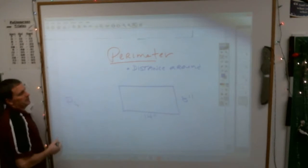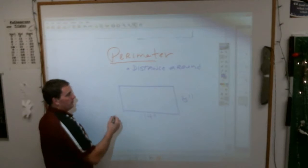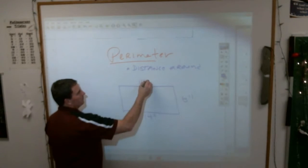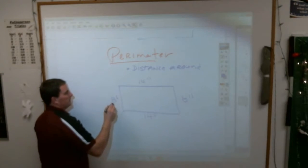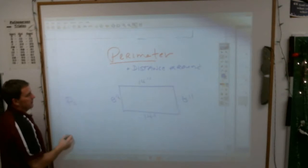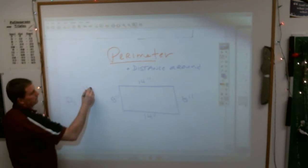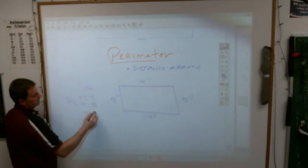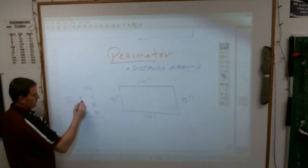you would add all of its sides. You might say, but they don't give me two sides. Well, with rectangles you know opposite sides are equal, so it ends up looking like that. So the perimeter would equal 14 plus 8 plus 14 plus 8.